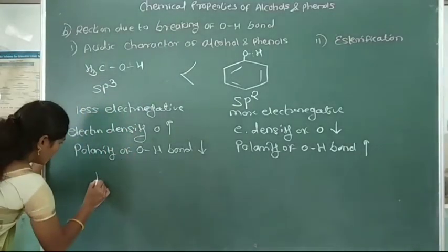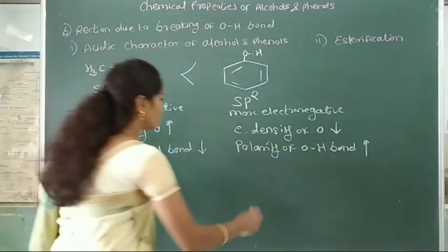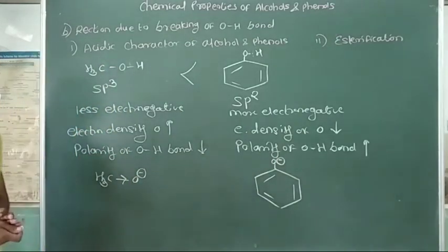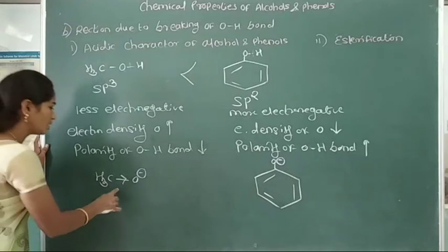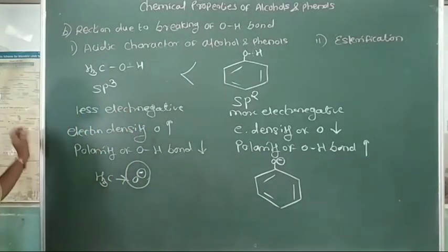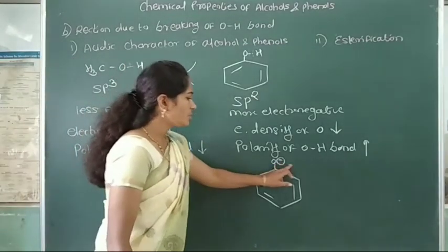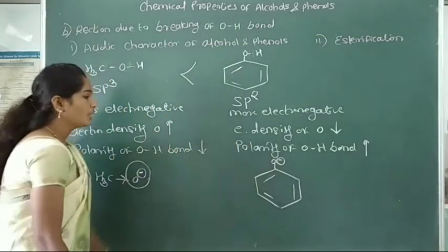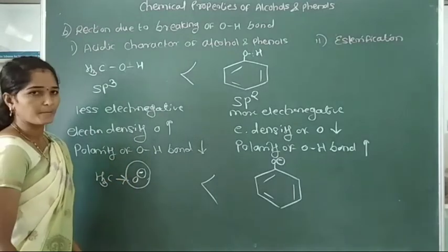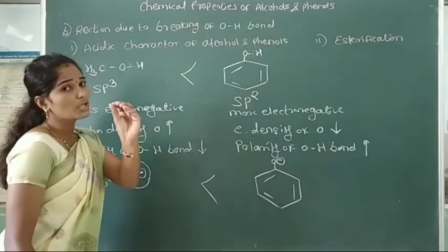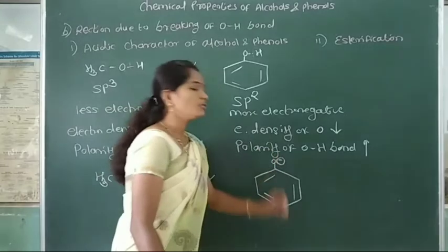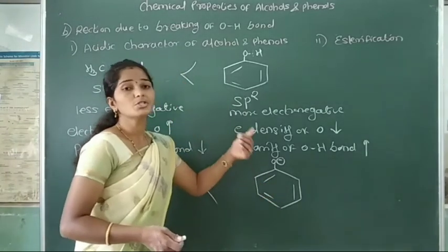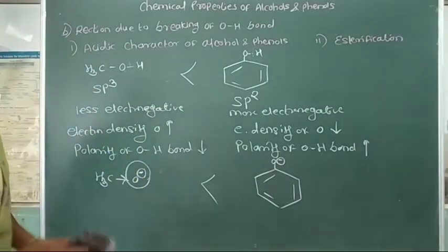In the case of oxide ions: in the alkoxide ion, the negative charge is localized on only the oxygen atom. But in the phenoxide ion, this negative charge is delocalized over the benzene ring by resonating structures. Therefore, the stability of the phenoxide ion is more than that of the alkoxide ion. This is the difference between the acidic character of alcohols and phenols.